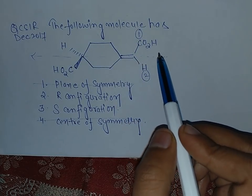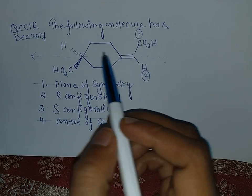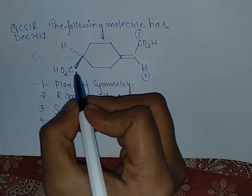This is first priority group, this is second, because we are numbering from this planar side. Now come to this side, this is a third group, this is a first priority group.